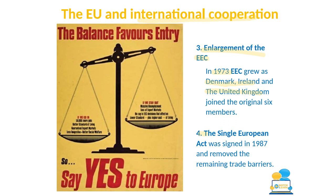The fourth way international cooperation was promoted was through the Single European Act, signed in 1987. It treats all of Europe as a single state, removing the remaining trade barriers that still existed within the common market. After 1987, goods could move even more freely across each member state. This was a very significant step in promoting international cooperation.